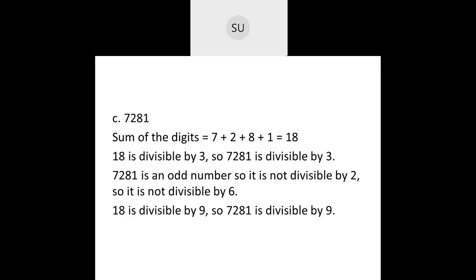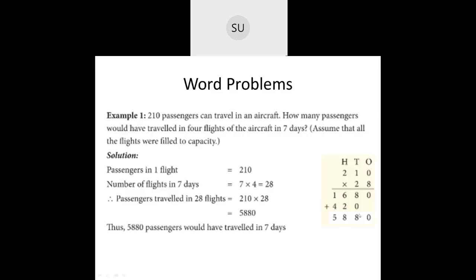Now we'll solve a few word problems. Example 1: 210 passengers can travel in an aircraft. How many passengers would have traveled in 4 flights per day over 7 days? Assume all flights were filled to capacity. Number of flights in 7 days = 7 × 4 = 28. Total passengers = 210 × 28 = 5,880. So 5,880 passengers would have traveled in 7 days.